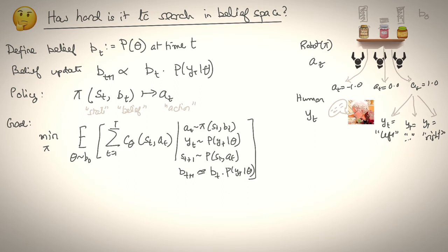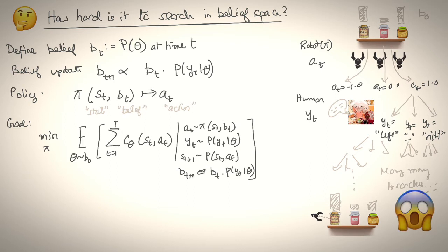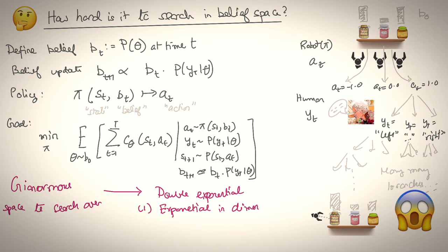The robot, in turn, can then consider various actions, and then think about the various responses the human can offer, and this branching can continue on and on and on until finally the robot reaches a state where it's collapsed uncertainty and picks the right jar. By now, you realize that this tree is giant, enormous. It has many, many, many branches, which makes this a difficult problem to solve.